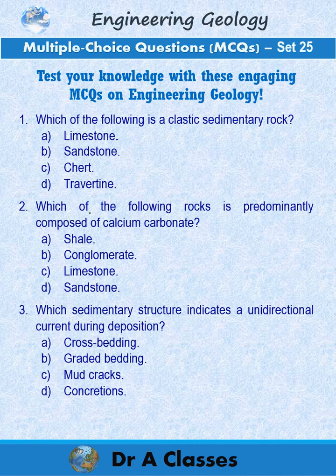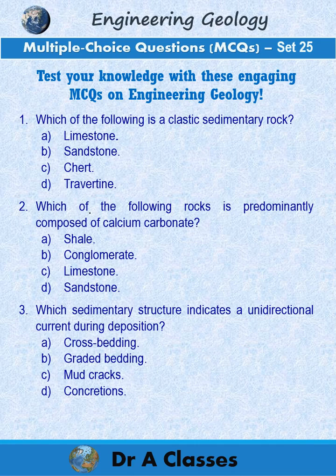Question 3. Which sedimentary structure indicates a unidirectional current during deposition? A. Crossbedding. B. Graded bedding. C. Mudcrack. D. Concretions.